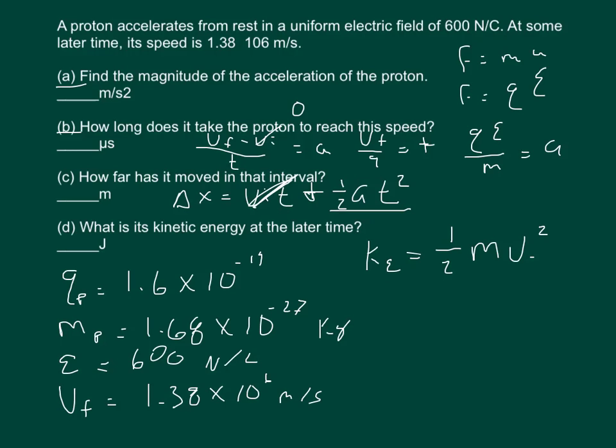So for part A, for Q you'll plug in 1.6 times 10 to the negative 19th, for E you'll plug in 600, and for the mass you'll divide that number by 1.68 times 10 to the negative 27th. And you should get something like the acceleration is equal to 5.7 times 10 to the tenth meters per second squared.